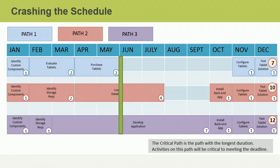You will continue to approach the final project activities, which are on the critical path. What exactly would you do to crash this activity and compress the project schedule? If you suggested adding resources to the develop application activity, you are correct.